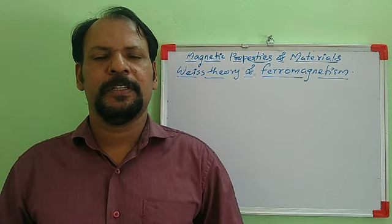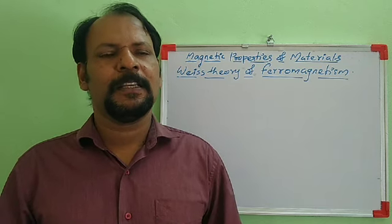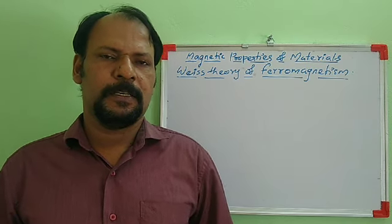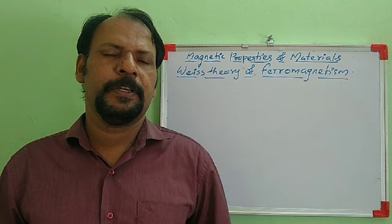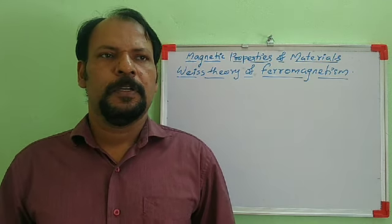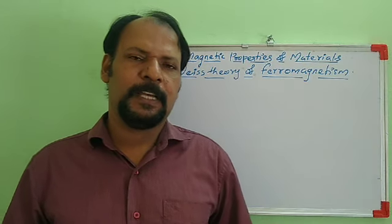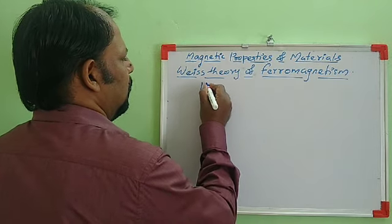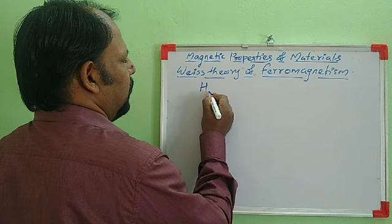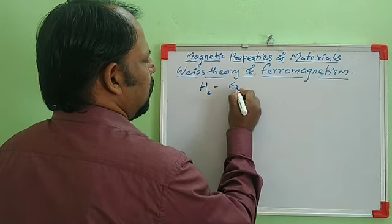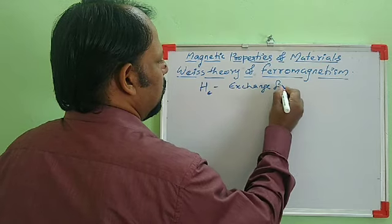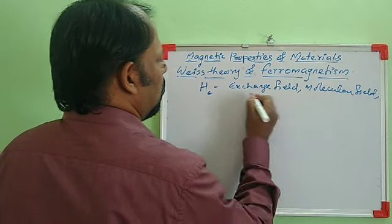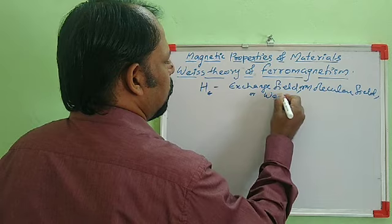There exists an interaction between adjacent magnetic dipoles, and that interaction causes them to align in a specific direction. We can take this mutual interaction between the dipoles as equivalent to a magnetic field which aligns these dipoles in a specific direction. This field is called the exchange field, or molecular field, or Weiss field.